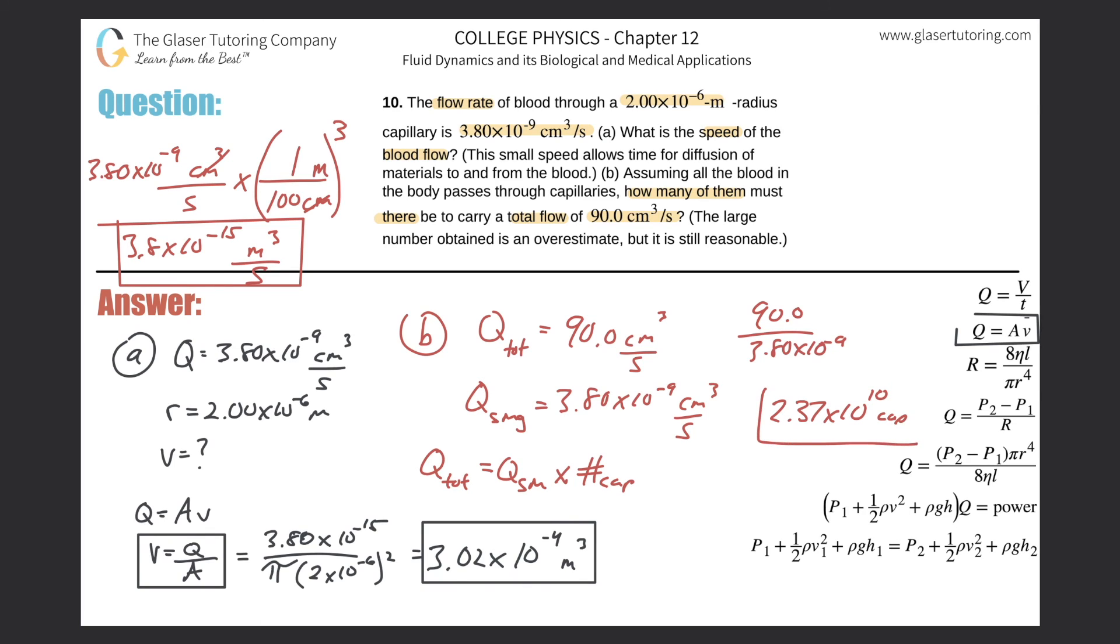So what is this number? This is a very large number. This is about 23 billion capillaries. And they said it's an overestimate, but yeah, it's reasonable. Guys, thanks for tuning in. Please remember to subscribe. I'll see you in the next video.